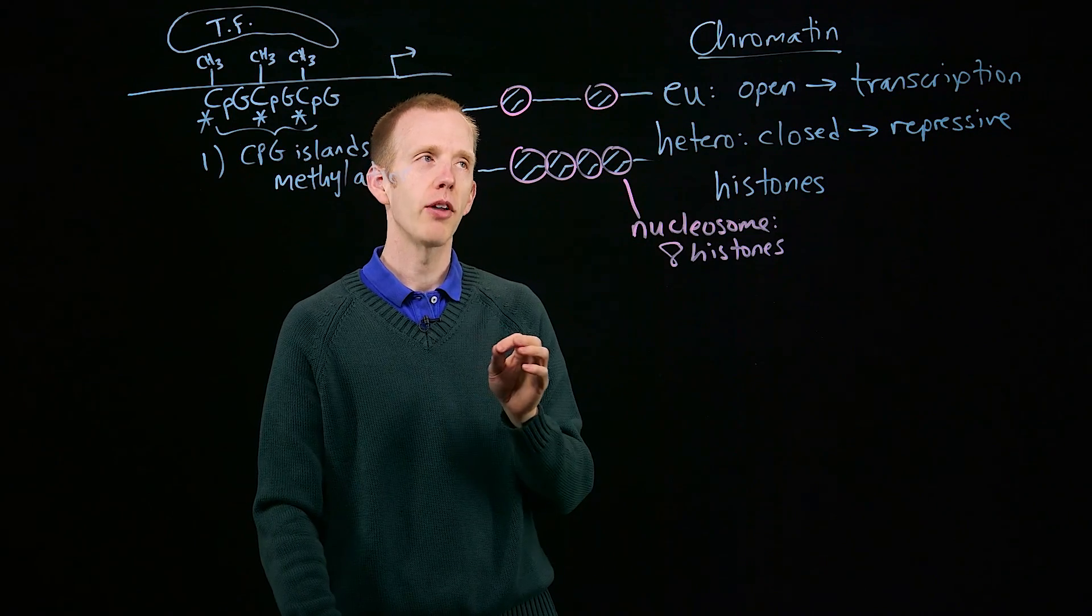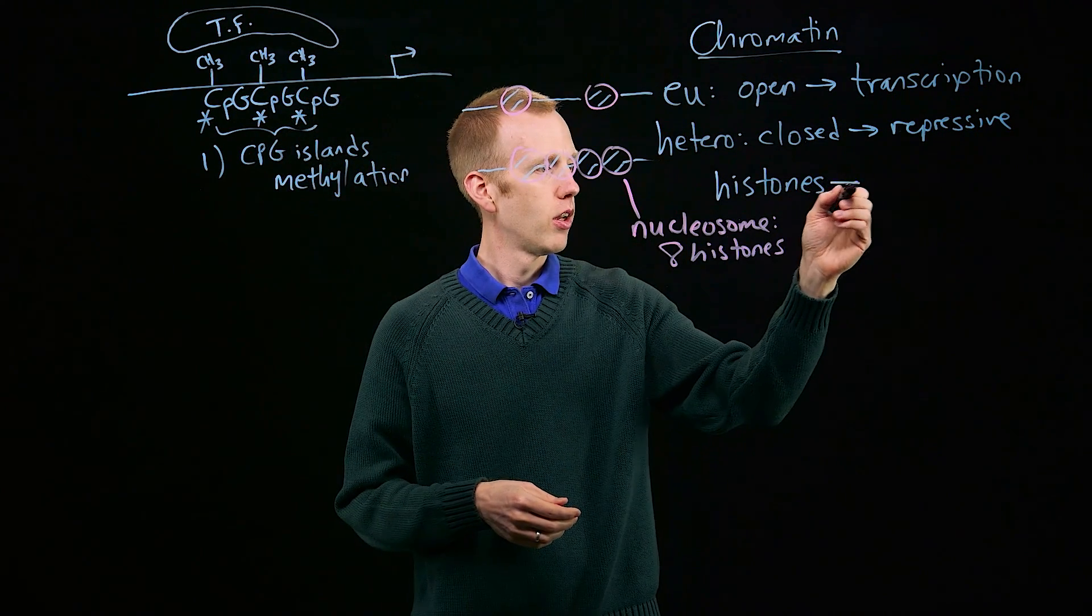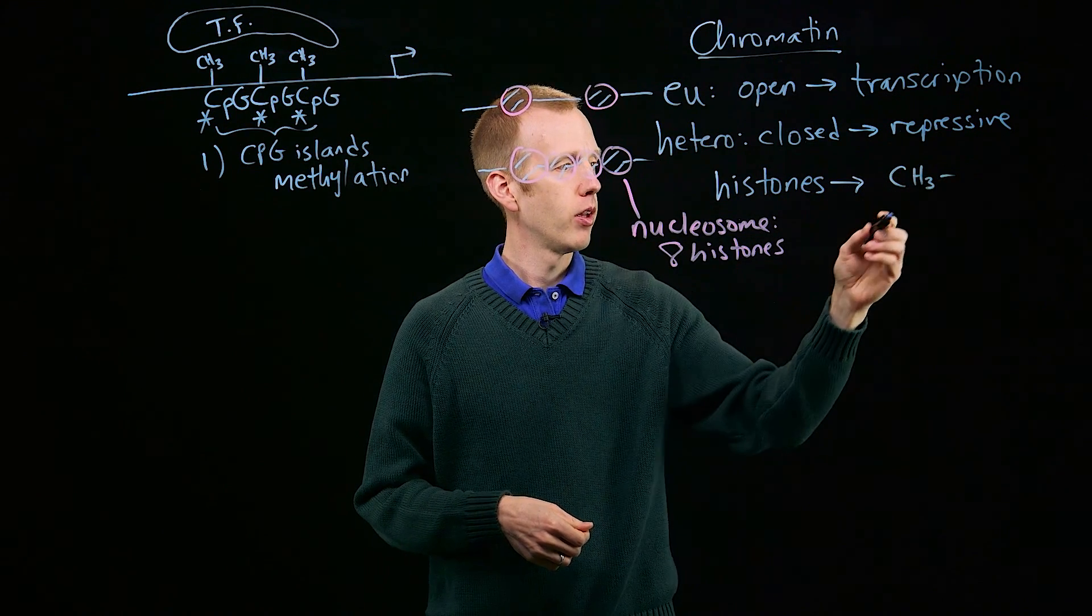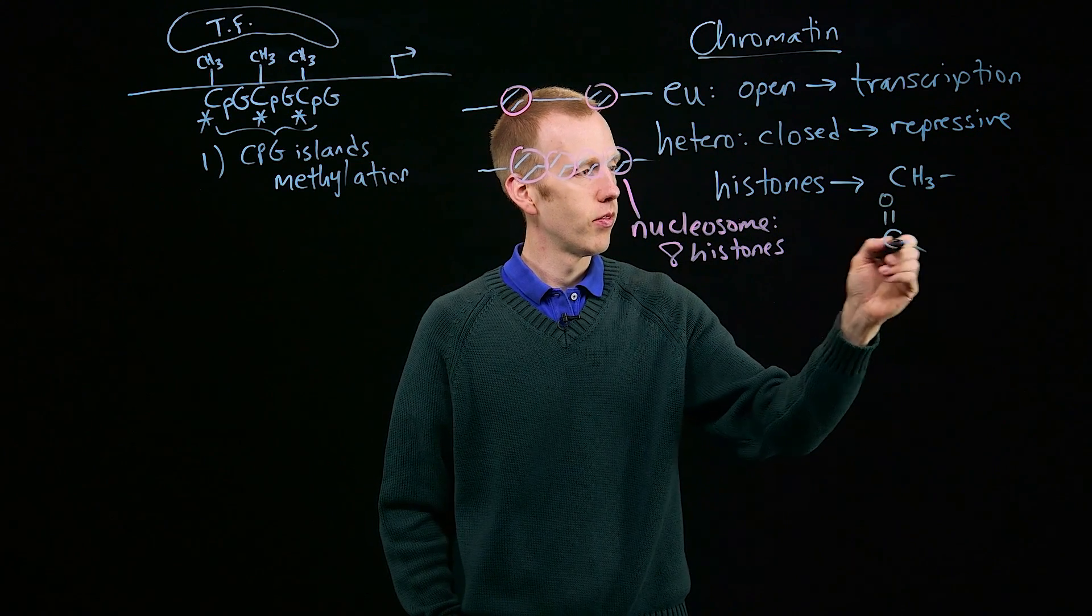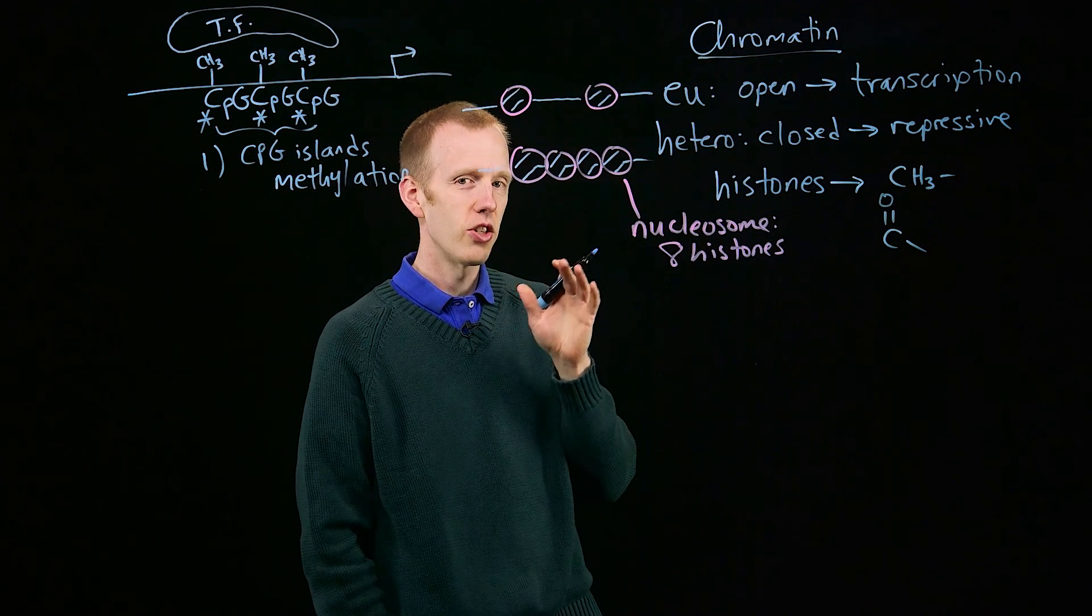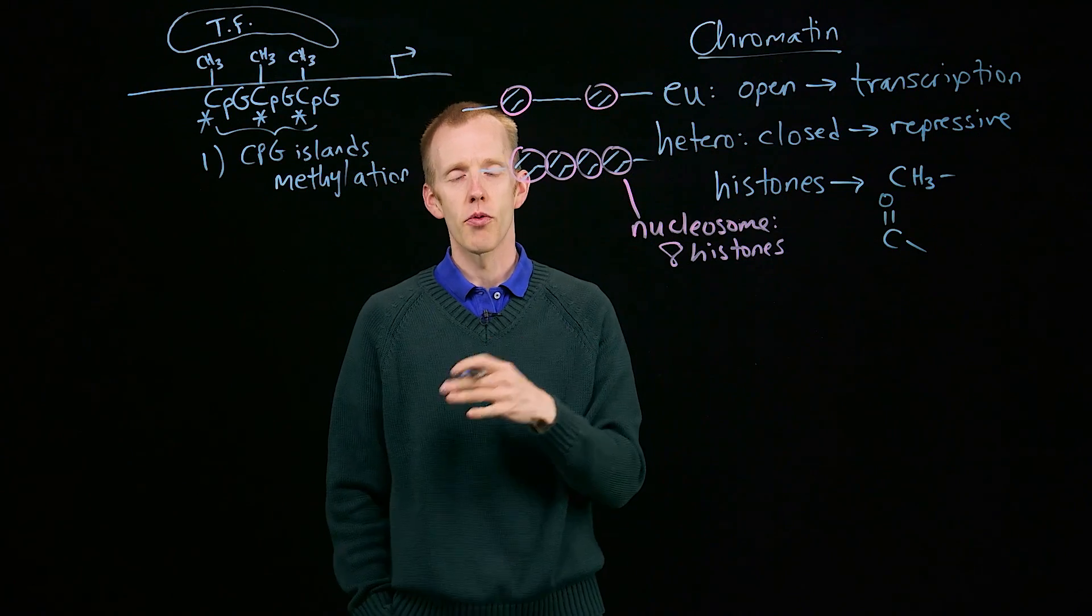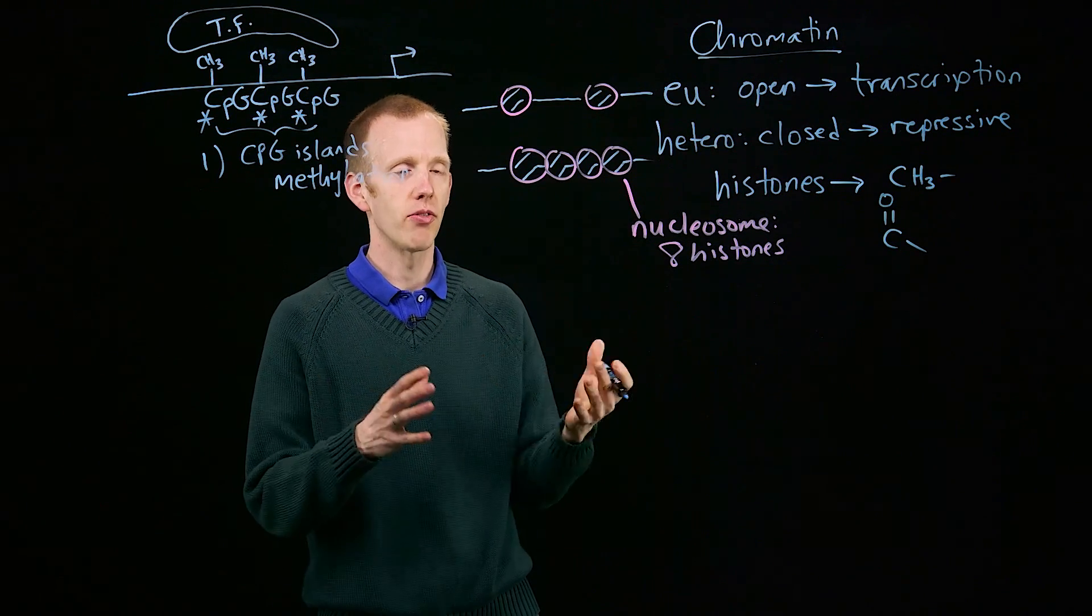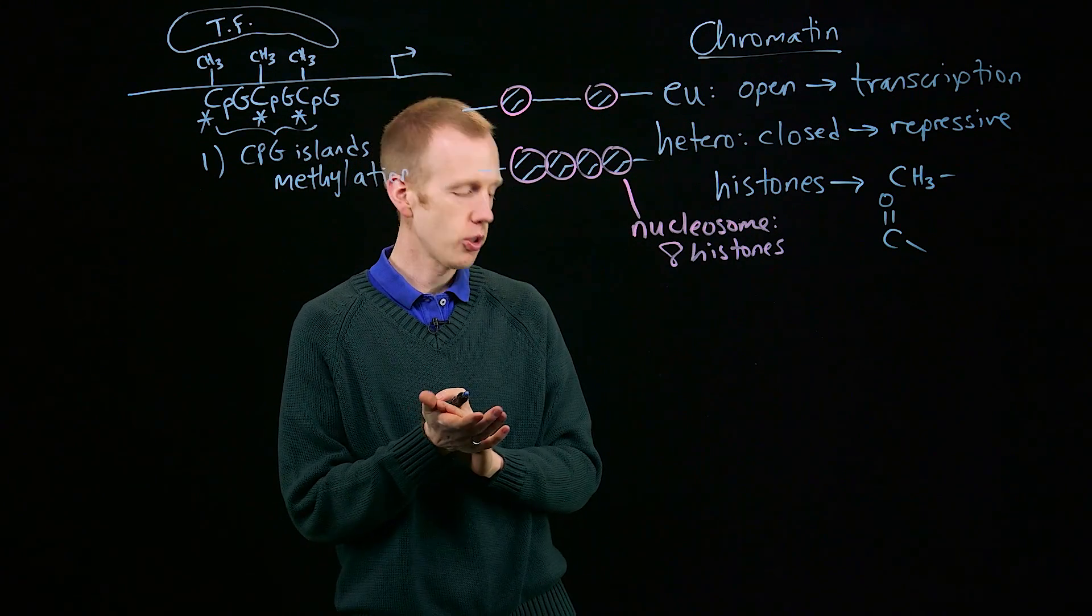So chemical modifications to the histones, which can be methylation or acetylation, an acetyl group, can cause changes to the chromatin structure. And a lot of work over the last couple of decades has generated some broad patterns of how histone chemical modifications affect gene expression regulation.